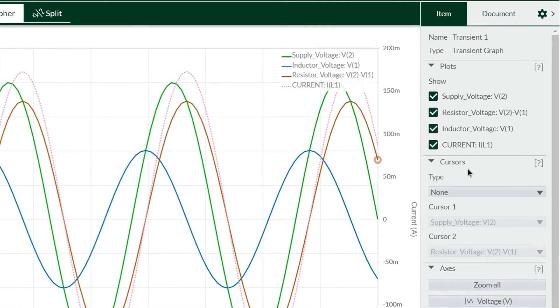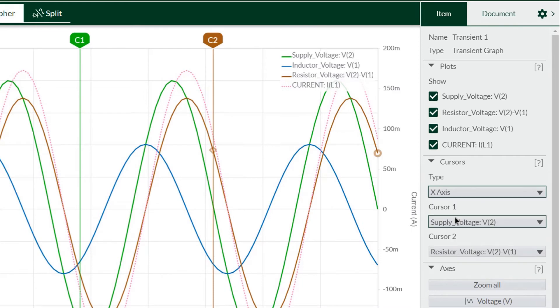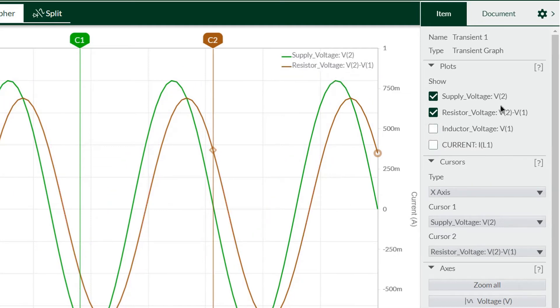Once simulated we need to add X axis cursors for the supply voltage and the resistor voltage. We can turn off the traces for the current and the inductor voltage so there is less clutter. We are only interested in the supply voltage and the resistor voltage as these form the hypotenuse and the adjacent side of the phasor respectively.